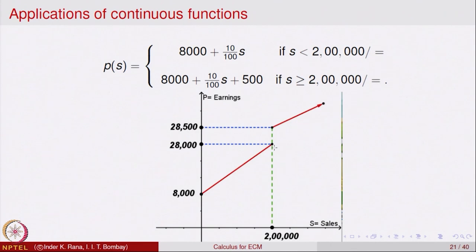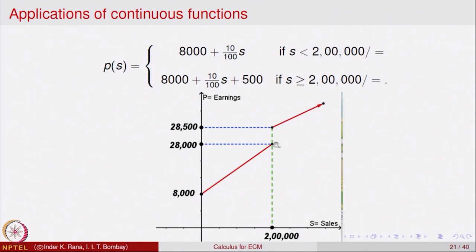As soon as he reaches 2 lakh in sales, there is a jump in his earnings — 500 more is added, making it 28,500. Then whatever more sales he makes, it keeps increasing. The two linear segments are parallel since both have slope 1/10, but there is a jump at the 2 lakh mark. This means there is a jump discontinuity in this function at the point where sales equals 2 lakh.